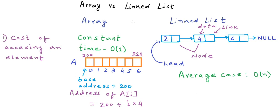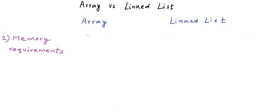If you have a requirement where you want to access elements frequently, then definitely array is a better choice. For the second parameter — memory requirement — with an array we need to know the size before creating it because it is one contiguous block of memory, so array is of fixed size.